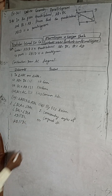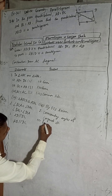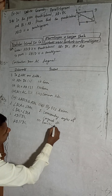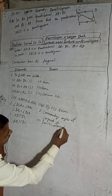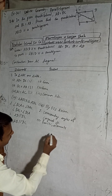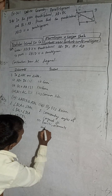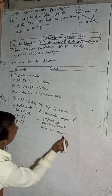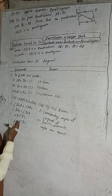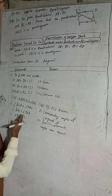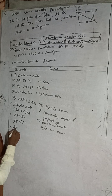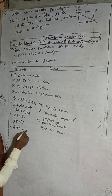From the two pairs of alternate angles being equal, alternate angles are equal. So when alternate angles are equal we can say the lines are parallel. Therefore AD is parallel to BC, and also AB is parallel to DC.